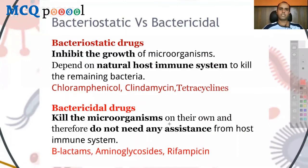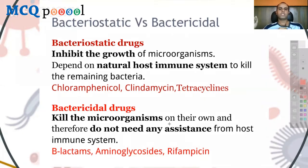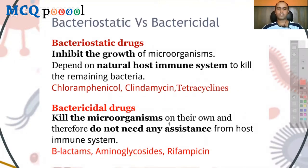Bacteriostatic drugs inhibit the growth of microorganisms but do not kill them, so the body depends on the natural host immune system to kill remaining bacteria. Examples include chloramphenicol, clindamycin, and tetracyclines. Bactericidal drugs, in contrast, kill microorganisms on their own and therefore do not need assistance from the host immune system — important for immunocompromised patients. Examples include beta-lactam antibiotics, aminoglycosides, and rifampicin.